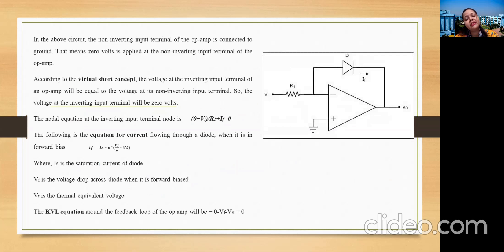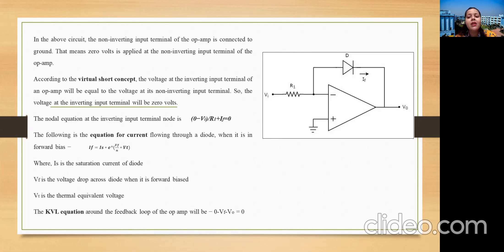Looking at the circuit diagram of the logarithmic amplifier: the input voltage is applied at the inverting terminal, the positive non-inverting terminal is grounded, and the feedback path is designed using a diode. This is the key difference between a normal op-amp configuration and a logarithmic amplifier — previously for integrators and differentiators the feedback used a capacitor.